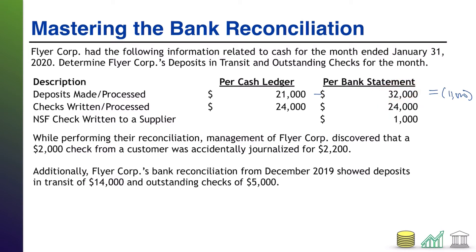For outstanding checks, you take the 24,000 checks per the company and subtract the 24,000 checks per the bank statement, which comes out to zero. So at face value, we have a negative amount of deposits in transit — very fishy — and zero outstanding checks. We haven't considered any of the additional information yet, so these calculations are based on bad numbers.